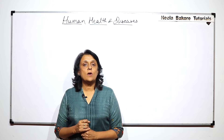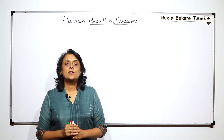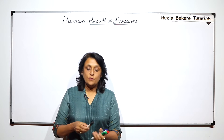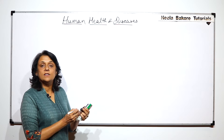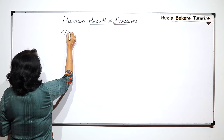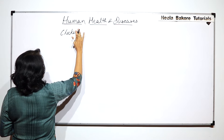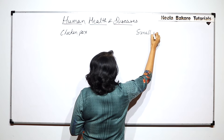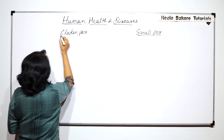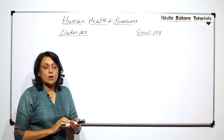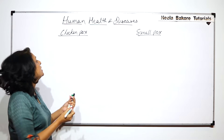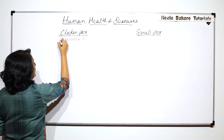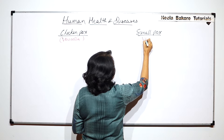In this part, we'll talk about two viral diseases: chickenpox and smallpox. We will compare these two because there are many symptoms which are confusing, and that's why we are taking both these diseases together. Both are caused by viruses. Chickenpox is also known as varicella, and smallpox is known as variola.